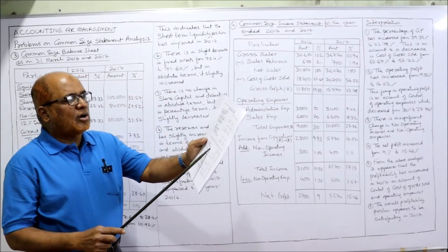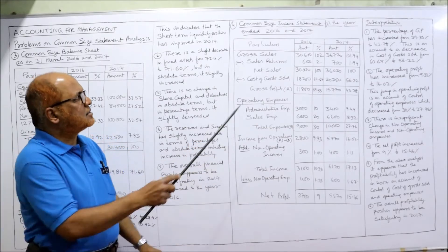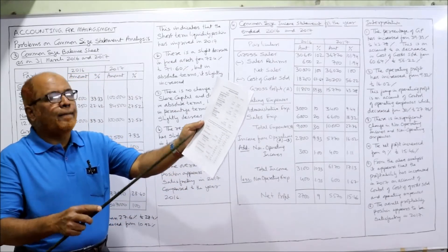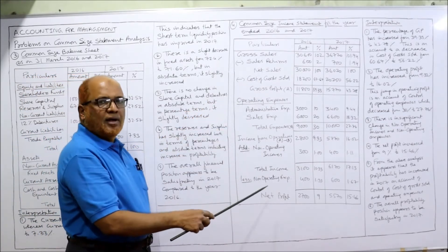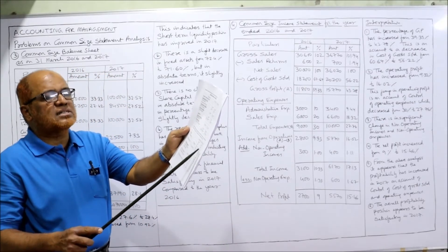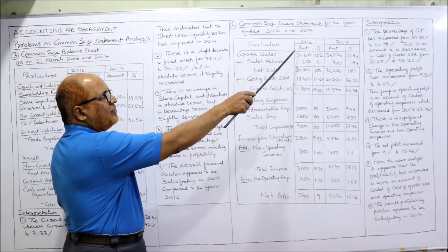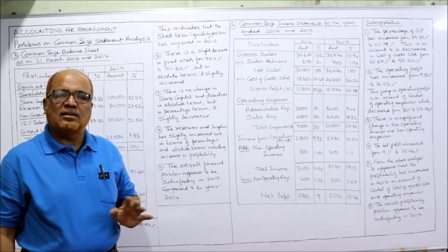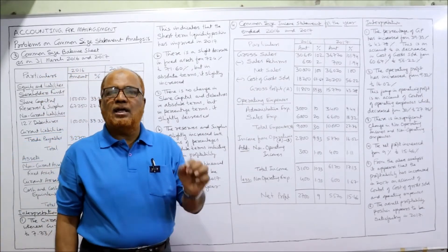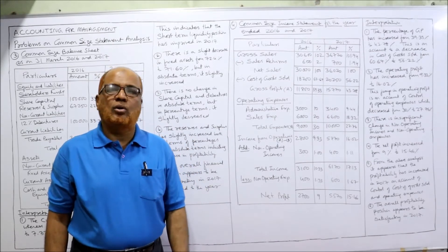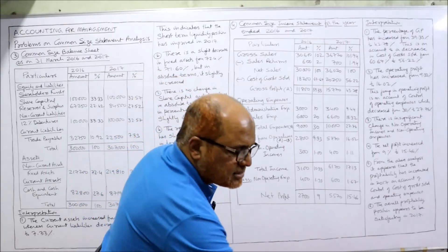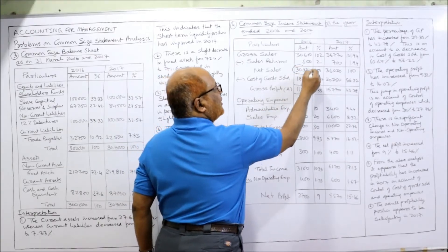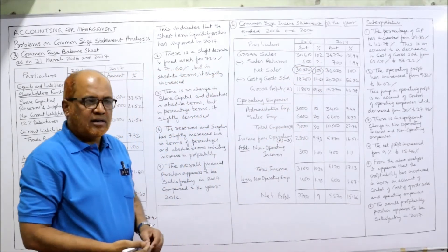The data given includes gross sales, less returns, and net sales (gross sales minus sales returns). The same format and amounts from the problem are copied for 2016 and 2017. For an income statement, the base should be net sales — not gross sales. In 2016, the net sales are 30,000, which is taken as the base at 100%.